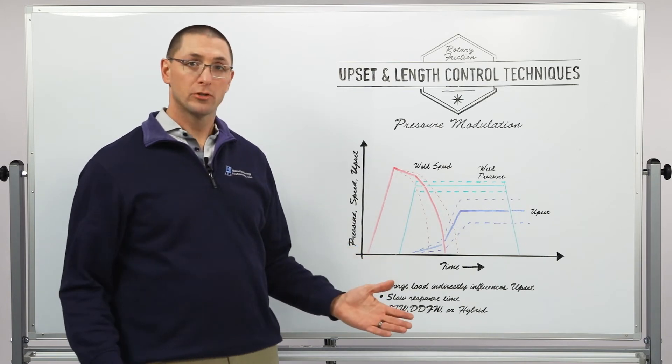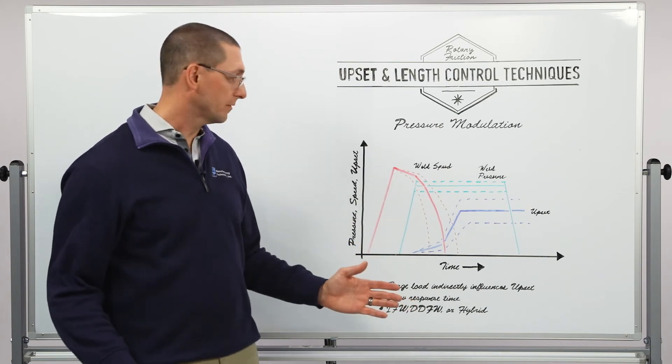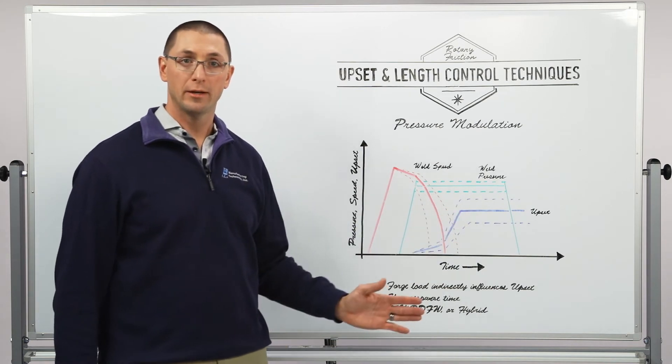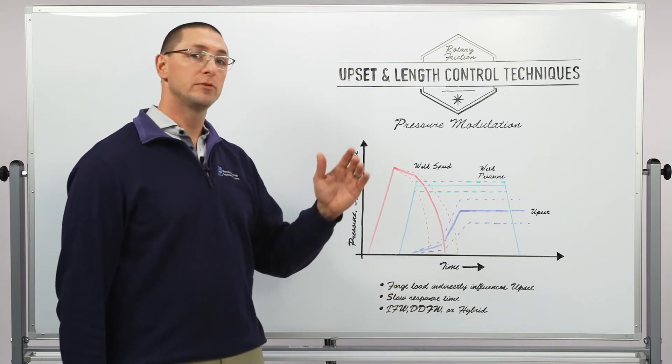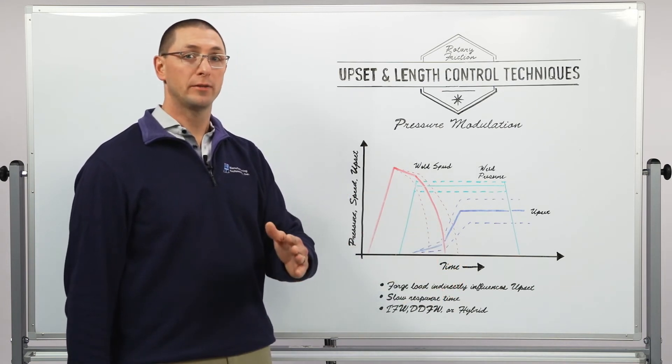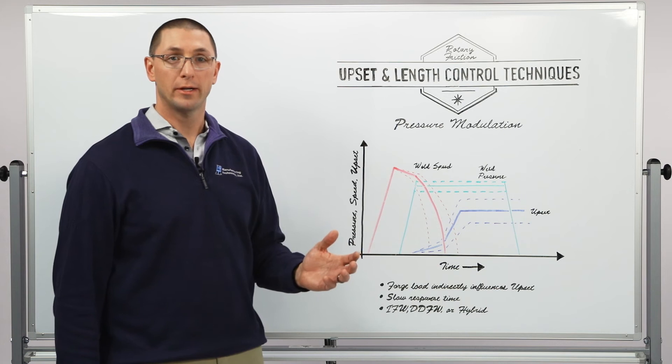So we create a standard inertia weld with no control whatsoever and we record an upset profile. This is the amount of upset that you get over time. And then we use the new weld that we actually want to control and compare it to the upset profile in order to generate an error signal.